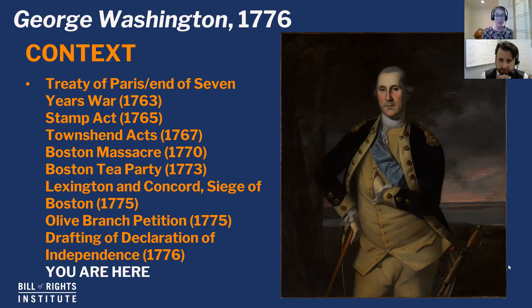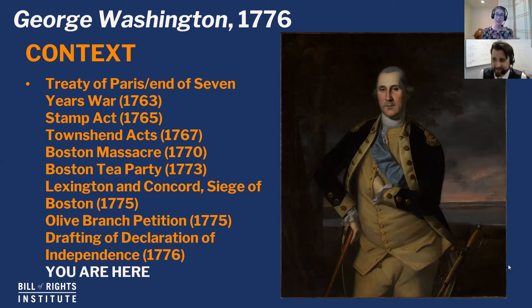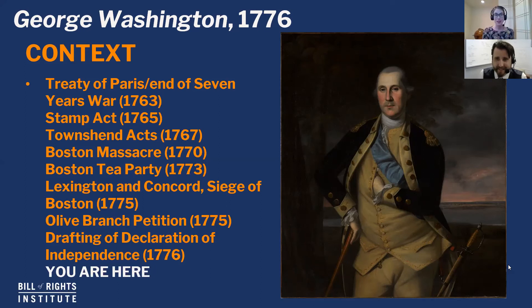George Washington is appointed commander of the Continental Army because there's actual fighting happening in Boston. They need a leader. He's appointed commander in 1775 and he frees Boston. Then there's a last-ditch effort to avoid a full-on war — the Olive Branch Petition. Congress sends a letter to King George III saying they don't want this to become a war, but King George III doesn't even read it. Now you are in open rebellion. As Washington is sitting for this portrait, the Continental Congress is drafting the Declaration of Independence.